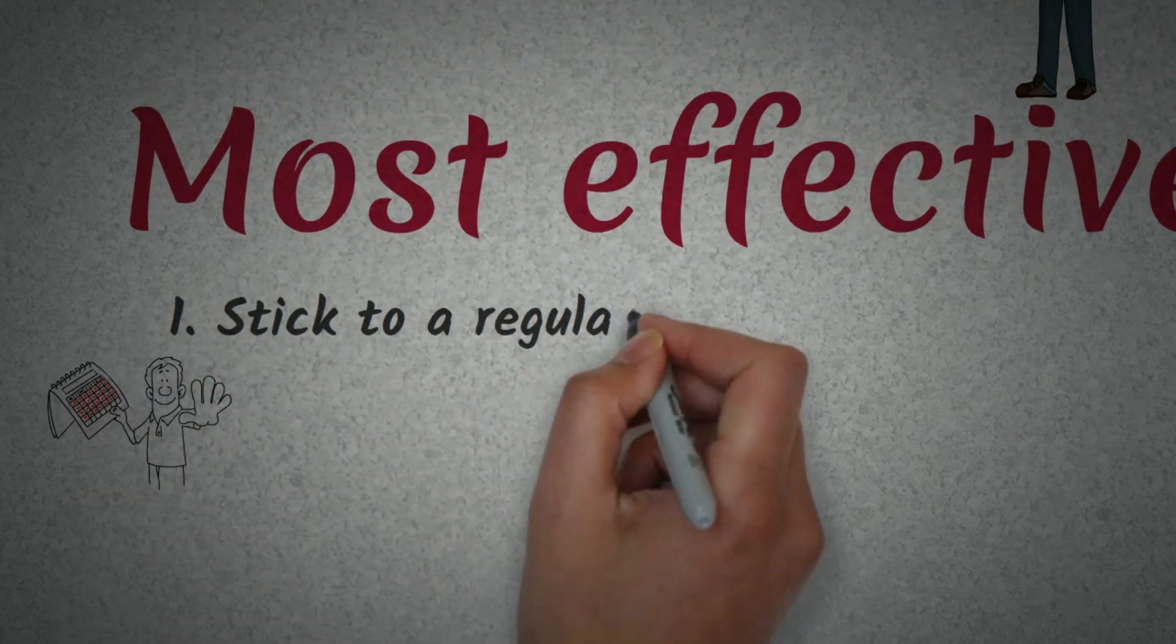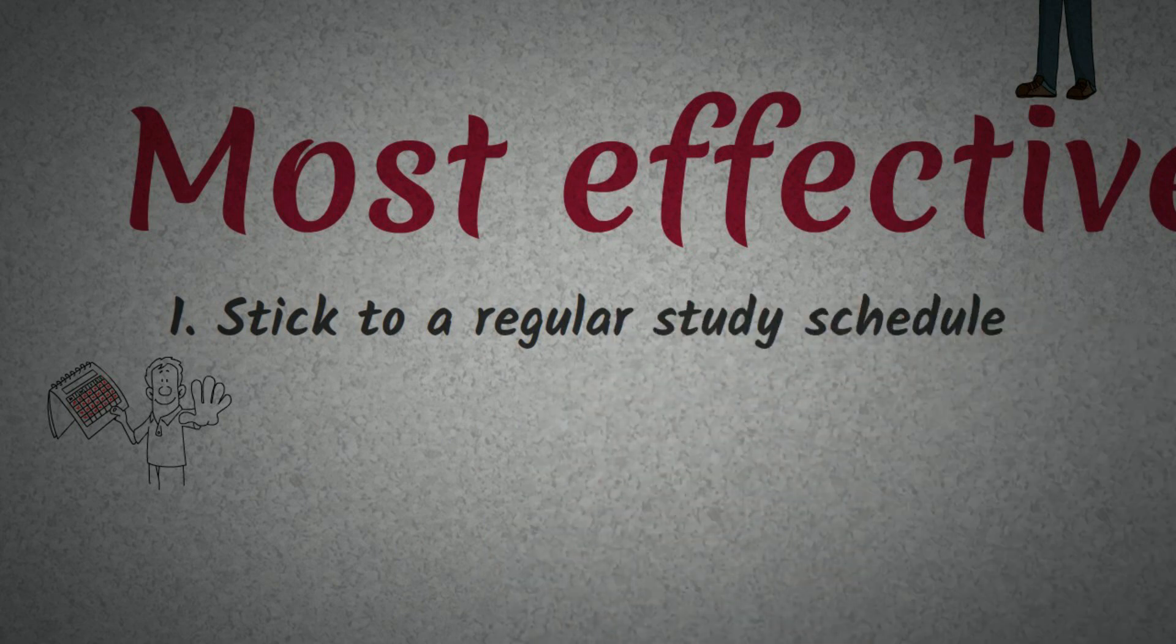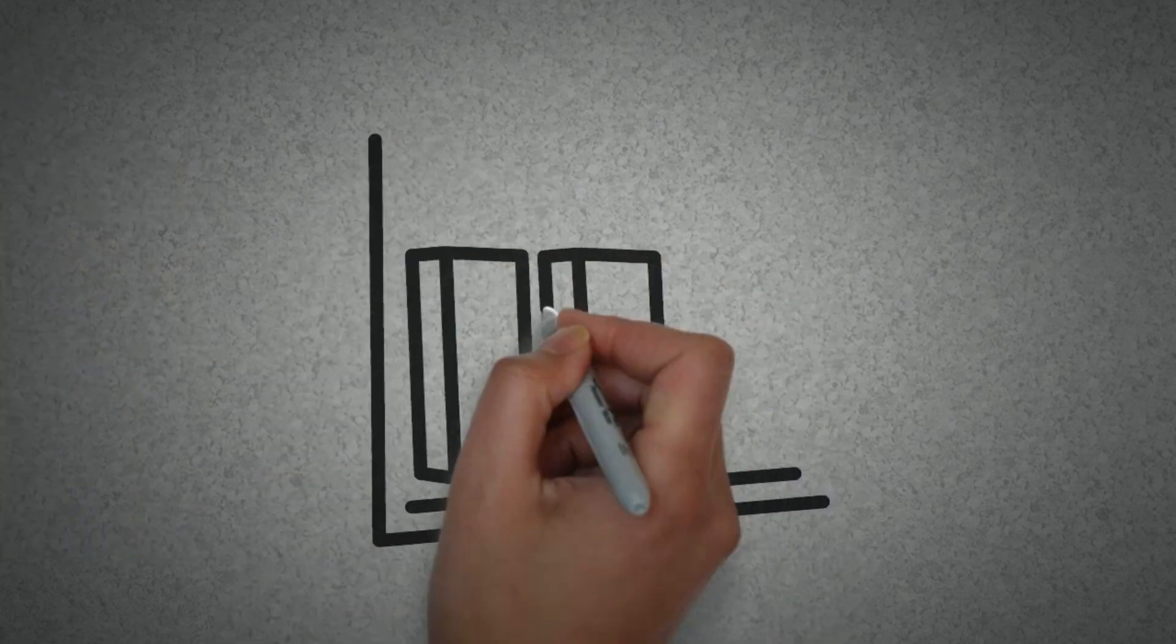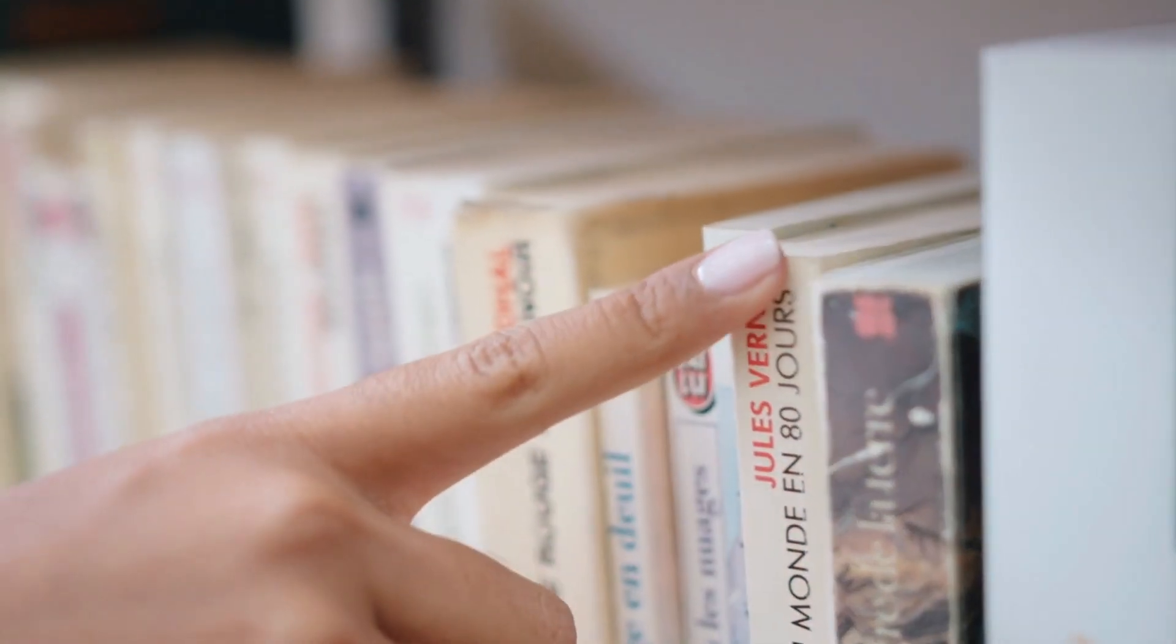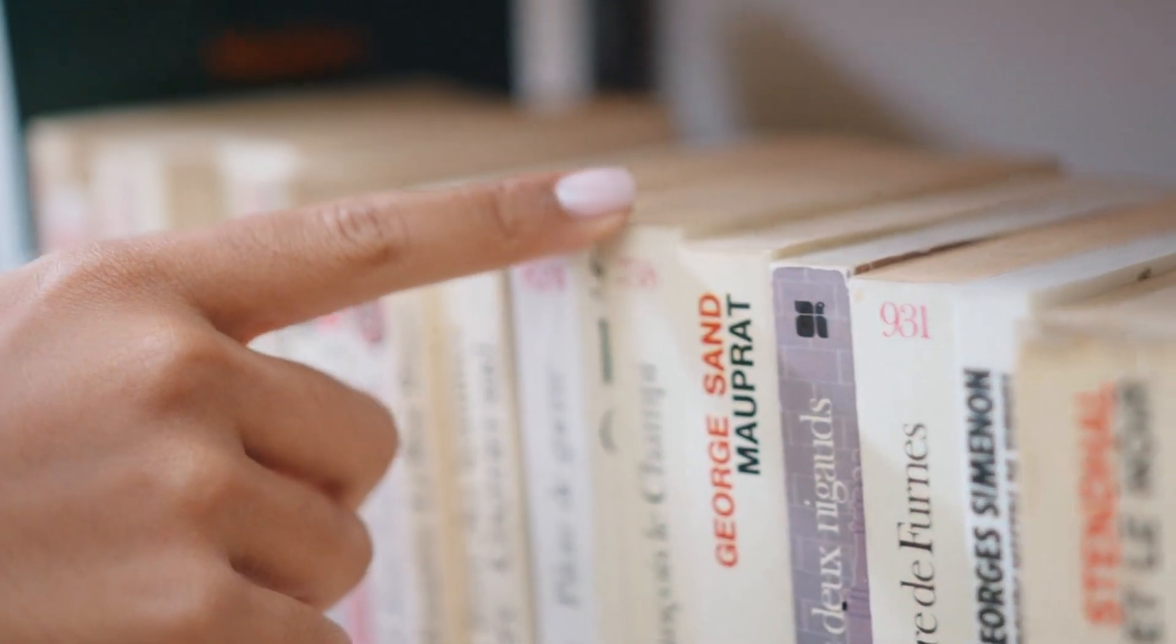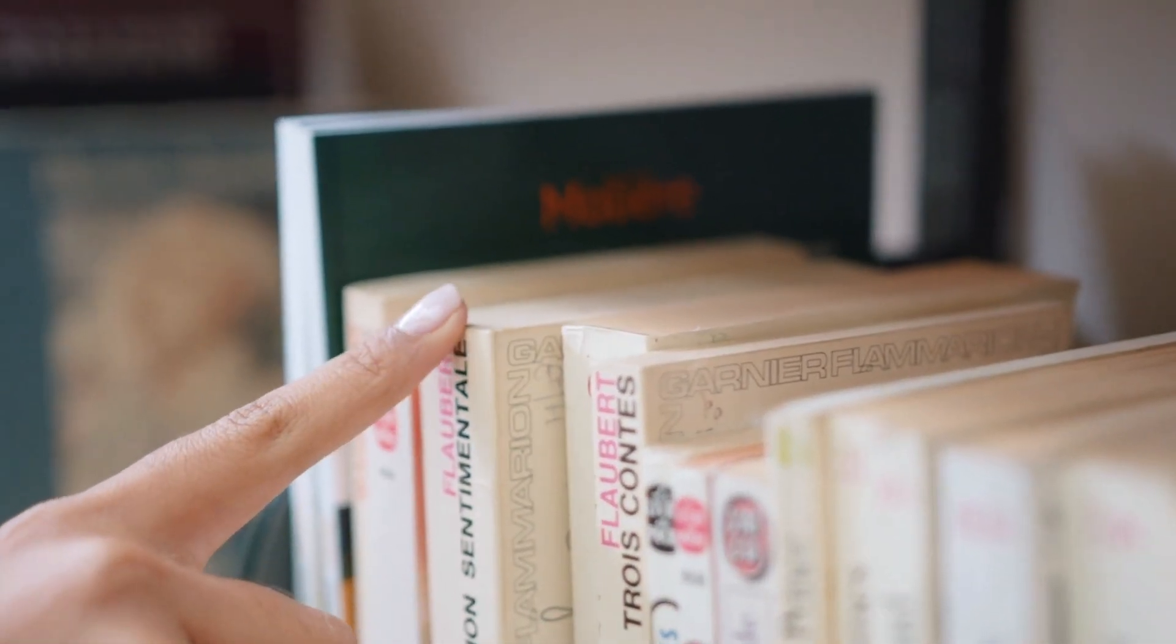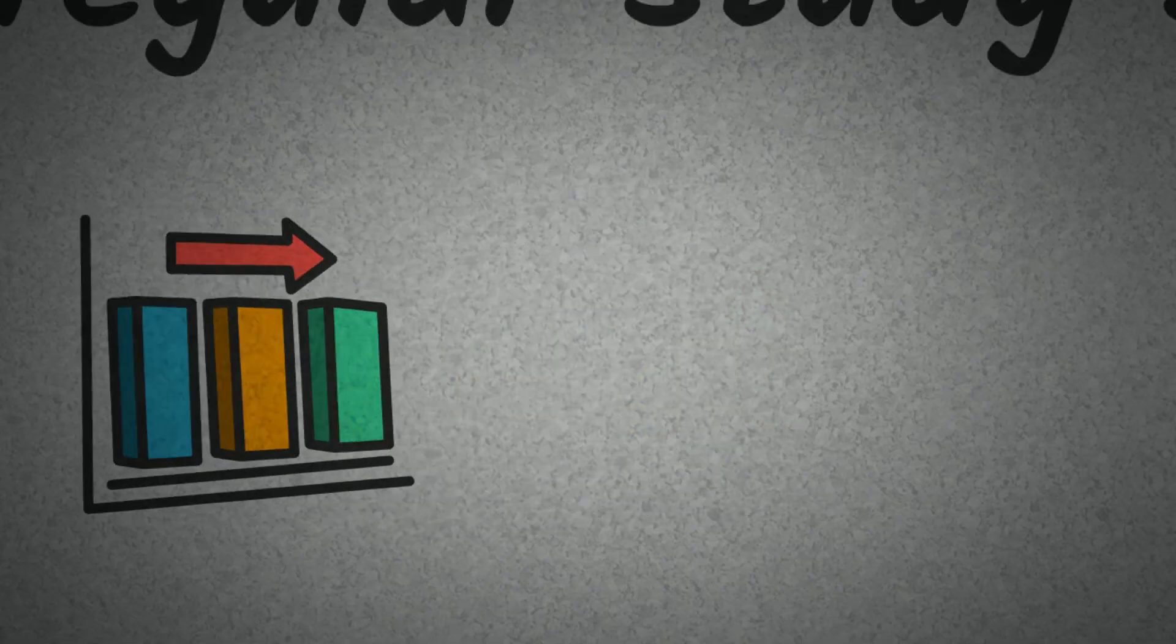One: Stick to a regular study schedule. Set aside a dedicated time each day for studying and try to stick to the same schedule consistently. This can help you establish a routine and make studying a habit. It is one of the best ways to ensure success in any educational endeavor. With a consistent routine, you can make sure that you are giving yourself the time and energy necessary to master the material. Not only will this help you stay on track with your studies, but it will also provide structure and discipline that can help you stay focused and motivated.